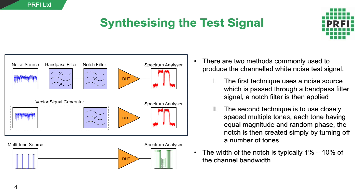The second technique is to use closely spaced multiple tones where each tone has an equal magnitude and a random phase. The notch is then created by turning off the appropriate number of tones, and the width of the notch is typically 1 to 10% of the channel bandwidth.